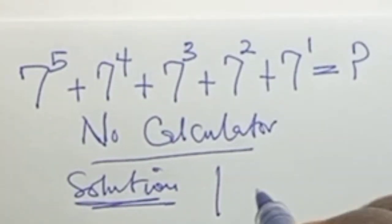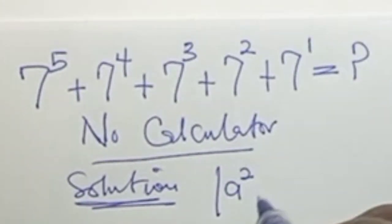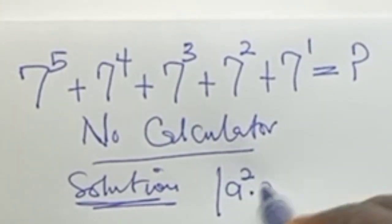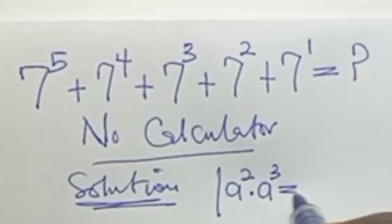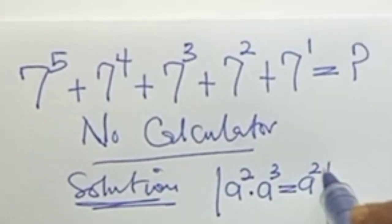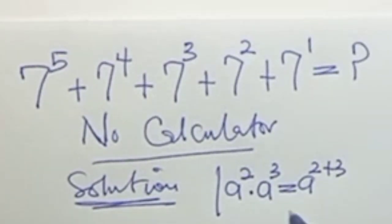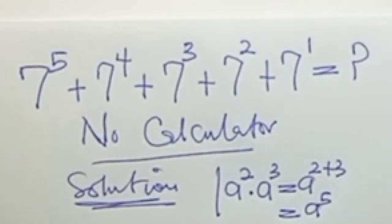Recall that a to the power of 2 times a to the power of 3 is equal to a to the power of 2 plus 3, which is equal to a to the power of 5.